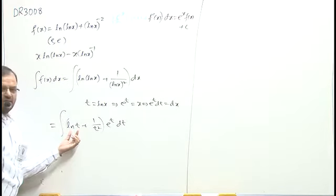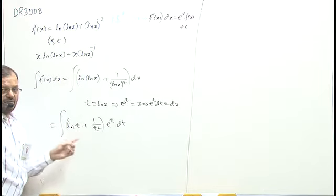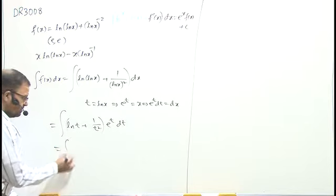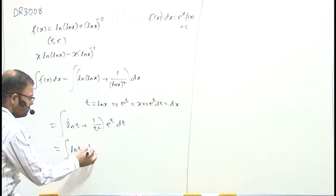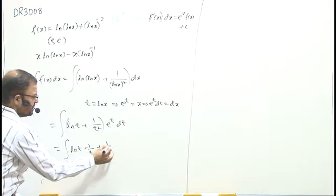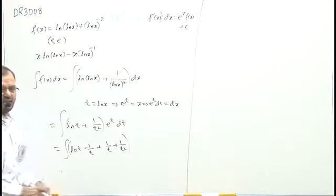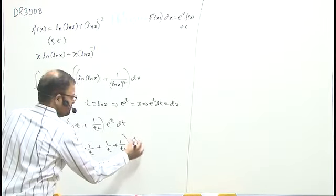This expression ka derivative 1 by t hai, toh wo yahaan par nahi hai. Lekin minus 1 by t ka derivative yahaan par hai. Toh, hum kuch aysa adding and subtracting karayenge. Yahaan par ln t minus 1 by t karayenge plus 1 by t plus 1 by t square. Hum add karayenge plus 1 by t subtract karayenge plus 1 by t it is e power t dt.